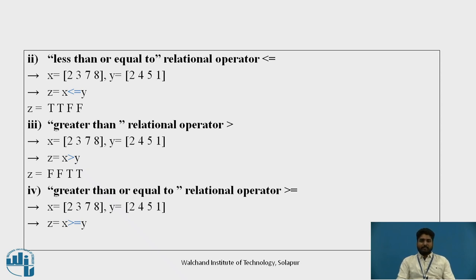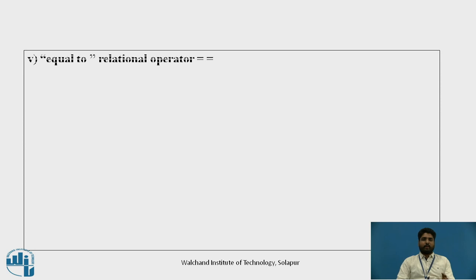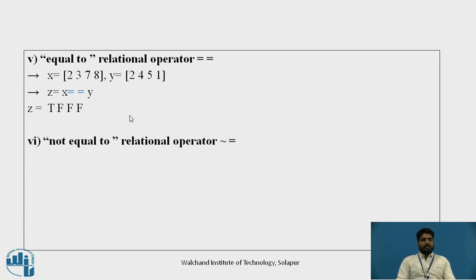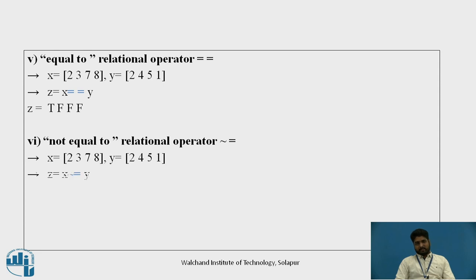These are very simple calculations you can try on your Scilab console window. An important point: whenever you want to check the equal to relation, the operator is written as == (two equal signs). For example, the first element 2 equals 2, so it shows true; the rest are false. For not equal to, use the ~= operator — since 2 equals 2, the output is false for the first element and true for the rest.